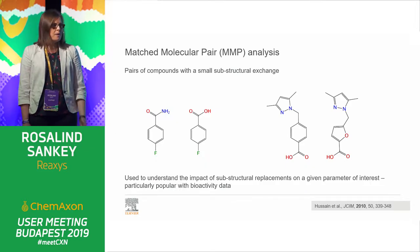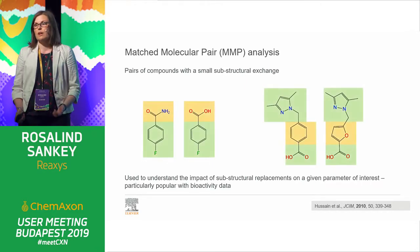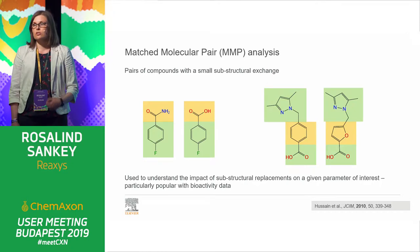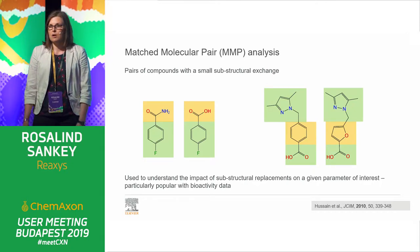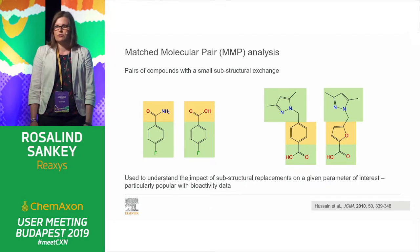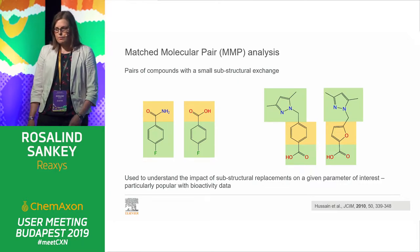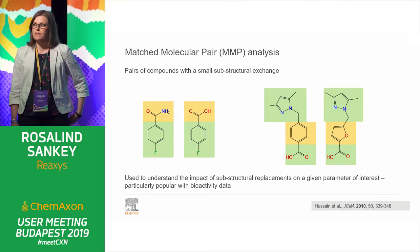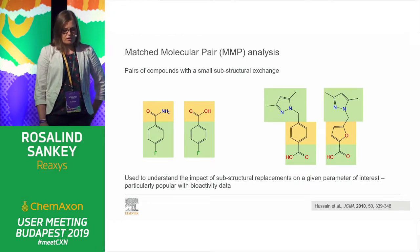So really, what should the researcher make next? Matched molecular pair analysis looks at what happens to physical chemical properties or bioactivity when you make small substructural changes to a molecule — for example, if you change the amide for an acid, or change a linker from a benzene to a furan. You can do this with many phys-chem properties, but predominantly this is done with bioactivity data because of the wealth of information available.